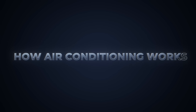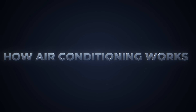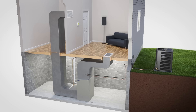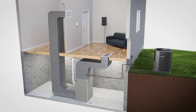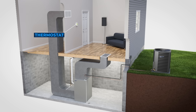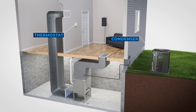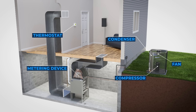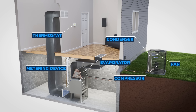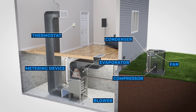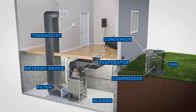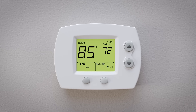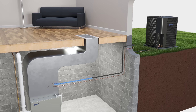How air conditioning works: there are eight main components that play a pivotal role in cooling your home — a thermostat, condenser, compressor, fan, metering device, evaporator, blower, and a filter.